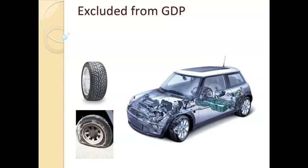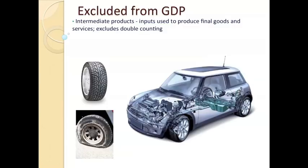So we've talked about what's included in GDP. Let's talk about what's excluded. Intermediate products are not counted towards GDP. An intermediate product is an input used to produce a final good and service. So here we have an automobile, and you can see lots of internal products that are part of this car — steering wheel, glass, and wheels. These things are not counted towards GDP once and then counted again when it's sold in its final version of the product. We just take into account the sale of the final good. Intermediate products are not counted towards GDP, only the final good and service — and this excludes double counting.